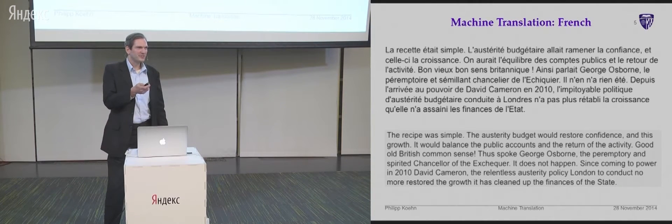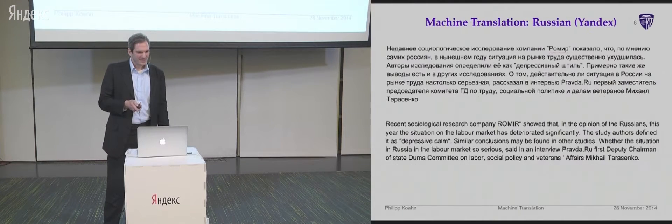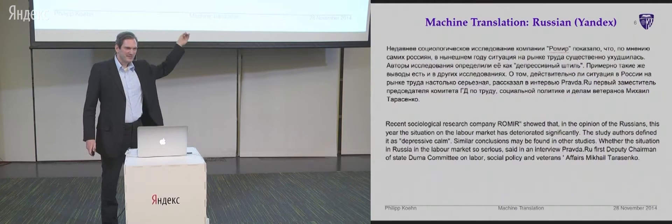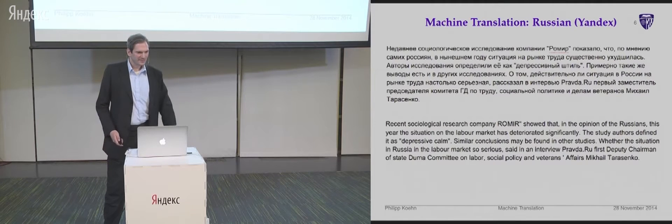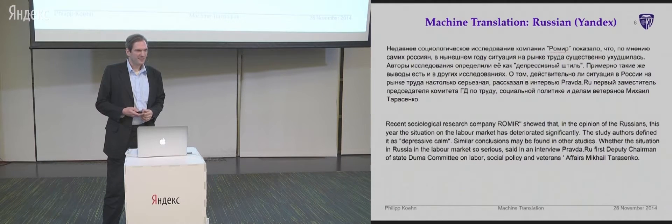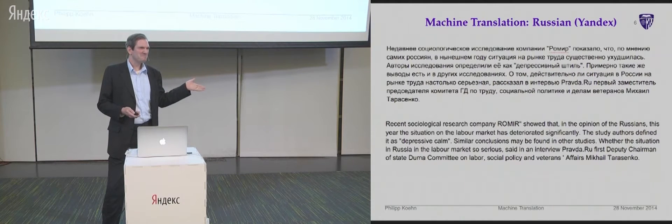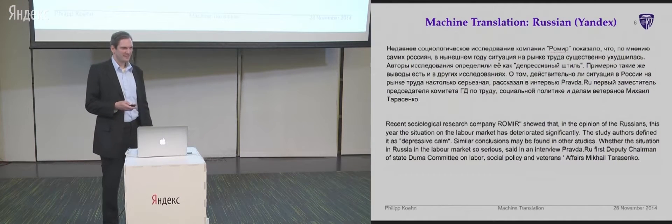Since I'm here in Russia, I'll run through a Russian example too. I pulled this literally 30 minutes ago from some random web page and ran it through Yandex machine translation. The top stuff makes no sense to me whatsoever. Here's the translation — you can probably judge for yourself how good it is. It sounds pretty fluent: 'Recent sociological research company Romria showed that, in the opinion of the Russians, this year the situation on the labour market has deteriorated significantly. The study authors defined it as depressive calm.' It sounds a bit odd, but I don't know what the Russian means. Similar conclusions may be found in other studies. That's not bad. I can live with that.